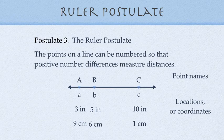The points on a line can be numbered so that positive number differences measure distances. And by that we mean, in this little diagram right here, this row is talking about point names. So, we have point A, B, and C. You can give a point any name you want. What is a point? A point is a location in space. So, we just give it a name.